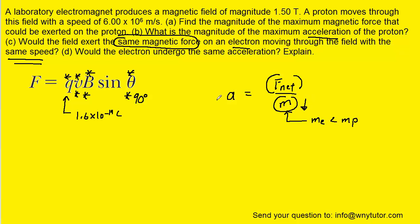that actually tends to increase the acceleration. So the electron would not undergo the same acceleration. Indeed, it would undergo a greater acceleration, and the reason is that it has a smaller mass. And so that would be the correct answer to part D.